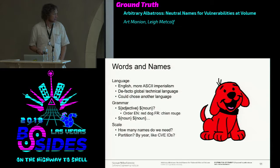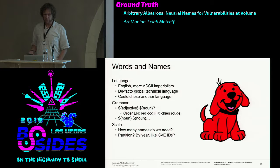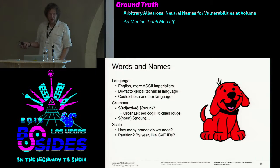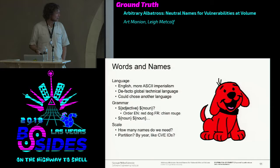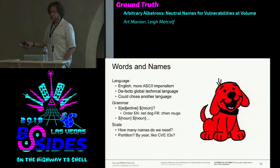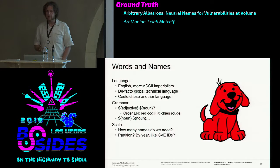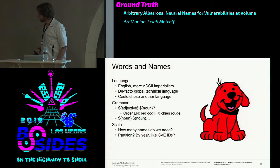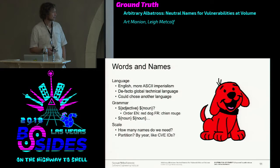We need enough names to cover the number of vulnerabilities there are in the world—future universe. There are about a hundred thousand currently; I don't know how many in the future. Lee's slides will cover the part where there are enough names. We probably think so, though many people have said that and been wrong.